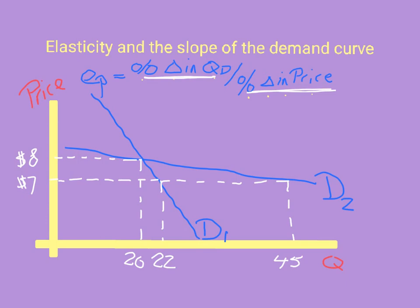In general, we can conclude that the flatter the curve — for example D2 — the higher the price elasticity of demand. And the steeper the curve — D1 — the lower the price elasticity of demand. An extreme case is a completely vertical demand curve, where the price elasticity of demand equals zero — this is a perfectly inelastic demand curve. The other extreme is the perfectly elastic demand curve, which is completely horizontal and flat, where the price elasticity of demand is infinitely large.